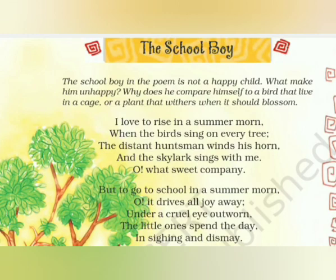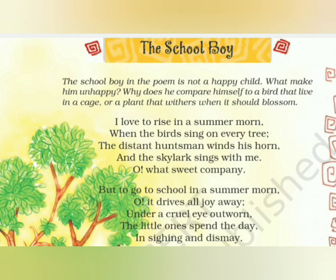The school boy in the poem is not a happy child. What makes him unhappy? Why does he compare himself to a bird that lives in a cage or a plant that withers when it should blossom? He compares himself to a plant that withers — withers means dries up — instead of blossoming, the plant dries up. So why does he compare himself to a bird in a cage and a plant that withers? Let's begin the poem.